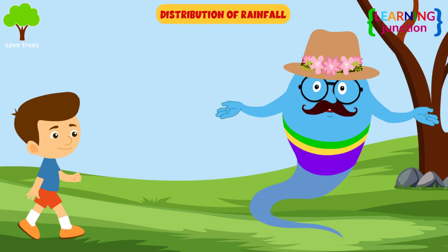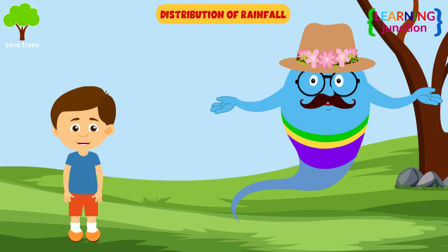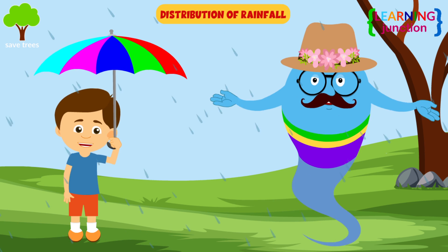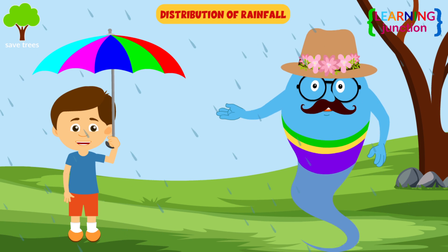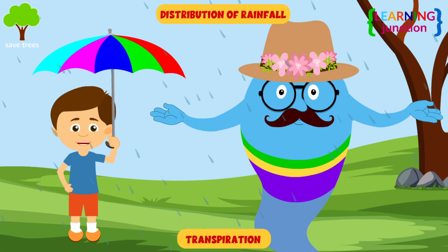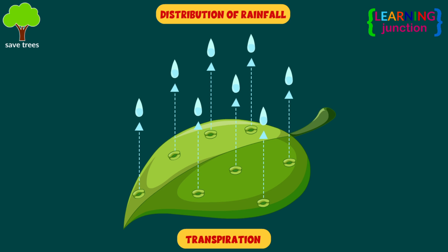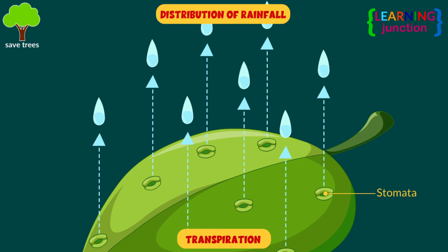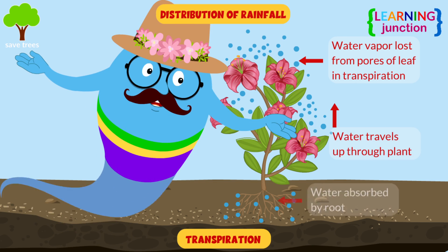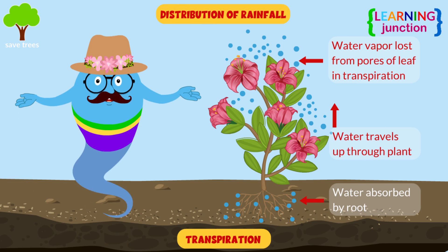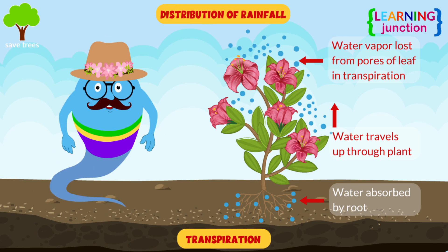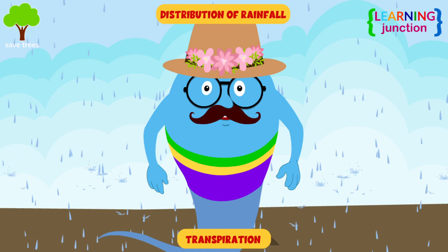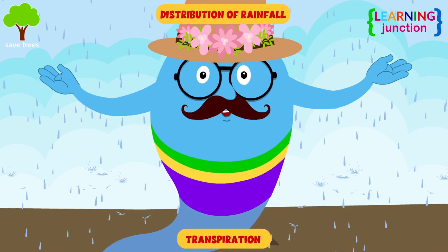Distribution of rainfall. Trees release water vapor into the air in a process called transpiration. They release extra water in the form of water vapor from small holes of their leaves, known as stomata. That water vapor rises in the atmosphere and forms new rain clouds, and returns to Earth in the form of rain.